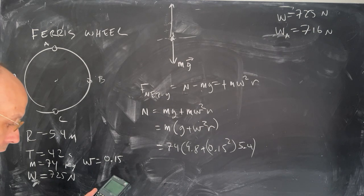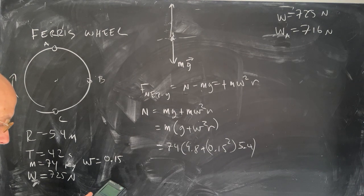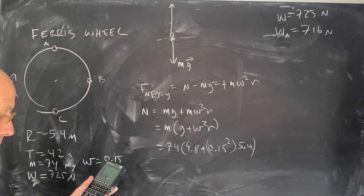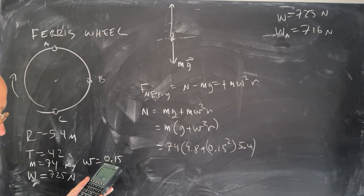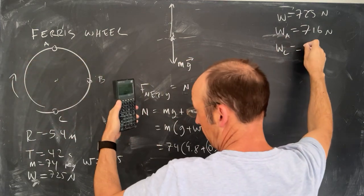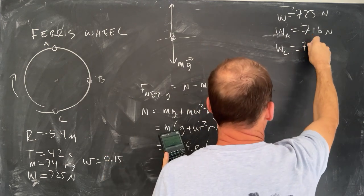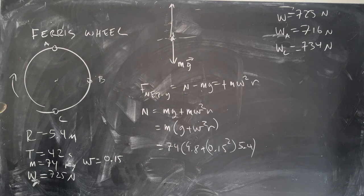Let's calculate that. 74, 9.8, 0.15 squared, 5.4 times, plus times. Apparent weight C is 734 newtons. So heavier. You feel heavier.